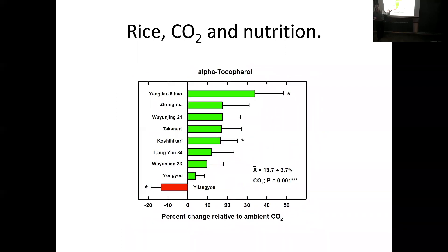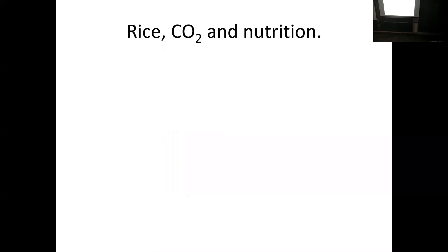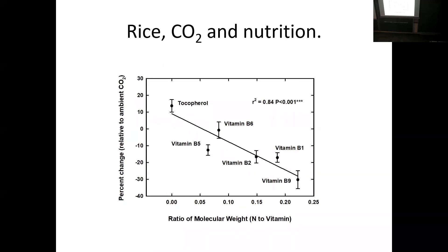And then we got alpha-tocopherol — vitamin E — which went up. Why is it going down over here and going up over there? We have a working hypothesis that it's related to the carbon-to-nitrogen issue. If I have a compound that has a lot of carbon and less nitrogen, it may be favored. But if I have a compound with a lot of nitrogen, it may go down. Vitamin B9 has about 22% of its molecular weight as nitrogen, and it's the one most adversely affected, whereas tocopherol has no nitrogen and was the one not negatively affected at all.